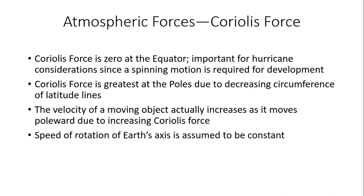The Coriolis force is greatest at the poles due to the decreasing circumference of latitude lines as you move northward or toward the south pole. The velocity of a moving object also plays into the strength of the Coriolis force — velocity generally increases as the object moves forward due to increasing Coriolis force. You may notice this with powerful extratropical cyclones in the mid-latitudes: as they move northward, the twisting motion becomes more and more apparent on satellite imagery. The faster the wind, the greater the apparent Coriolis force. The speed of rotation of Earth's axis is assumed to be constant.